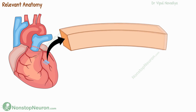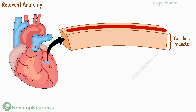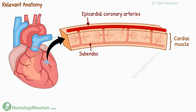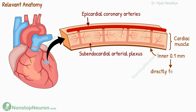Now let's see the arrangement of the vessels in a cut section of the wall. This is cardiac muscle. The main coronary arteries lie over its surface, so they are also called epicardial coronary arteries. They branch into smaller arteries that penetrate from the surface into the muscle mass, then divide to form a capillary network. Most of the muscle mass in the heart receives blood from this arterial supply. However, a very thin layer of endocardium of about 0.1 mm receives nutrients directly from the blood within the chambers.